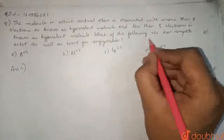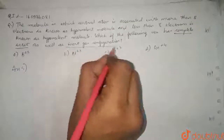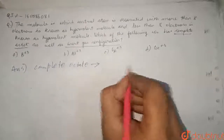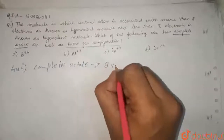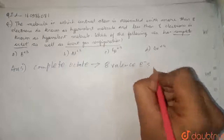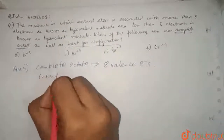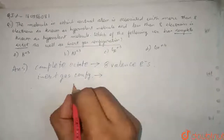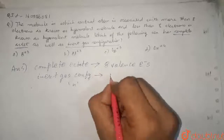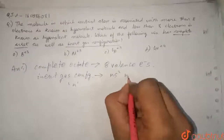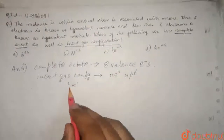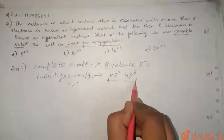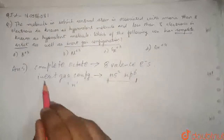In this question, we are demanding two things. First, complete octet, and second, inert gas configuration. Complete octet means that the valence shell has 8 electrons — 8 valence electrons must be present. Inert gas configuration means that if the highest principal quantum number is N, then the valence shell should be Ns², Np⁶. If N is the outermost shell value, then the valence shell should be Ns², Np⁶ — we call it inert gas configuration.